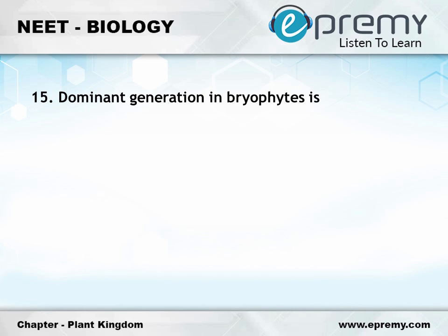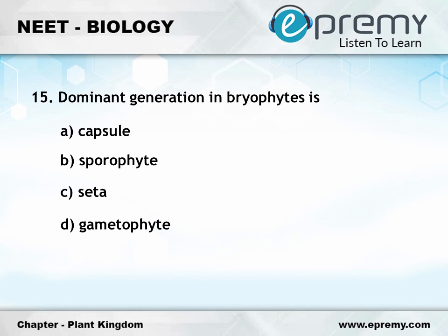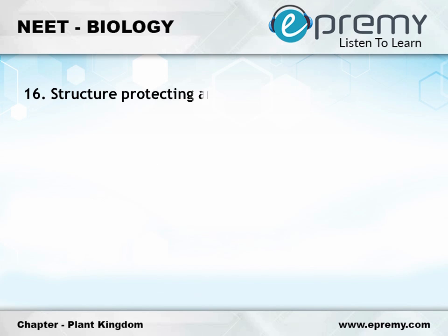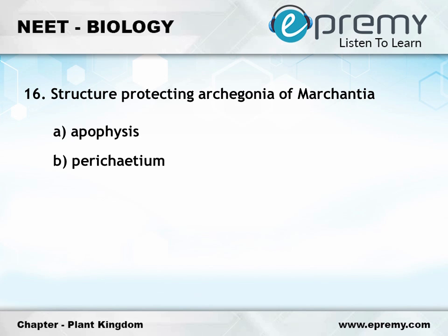Question number fifteen: dominant generation in bryophytes is option A capsule, option B sporophyte, option C seta, option D gametophyte. The answer is option D gametophyte. Question number sixteen: structure protecting archegonia of Marchantia is...